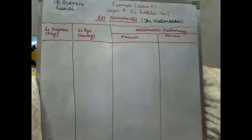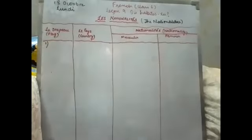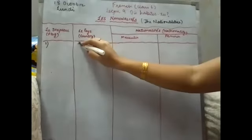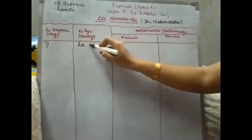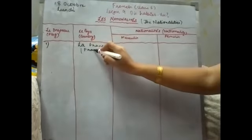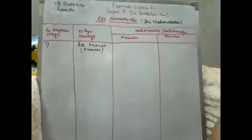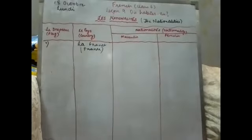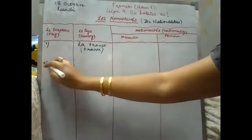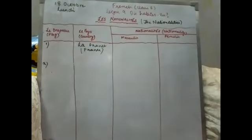How you have to do is, first of all, suppose I'm doing the flag first. I am telling you about France, la France. Here you need to draw the flag of France. Just leave three or four lines and then start the next one. Give the proper space for the flag.